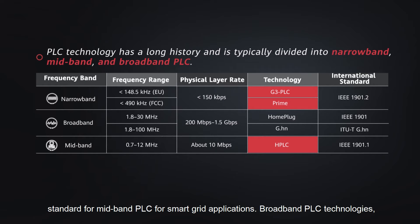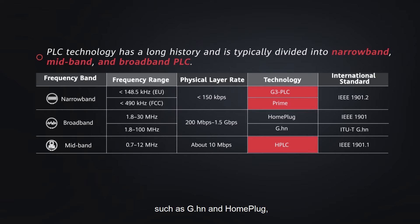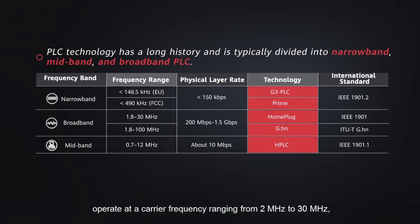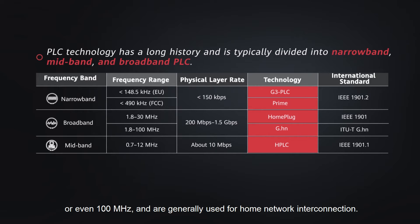Broadband PLC technologies such as GHN and HomePlug operate at a carrier frequency ranging from 2 MHz to 30 MHz, or even 100 MHz, and are generally used for home network interconnection.